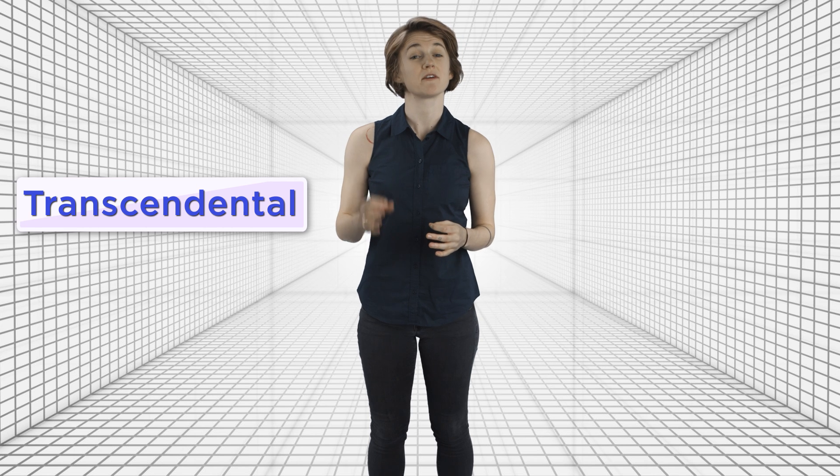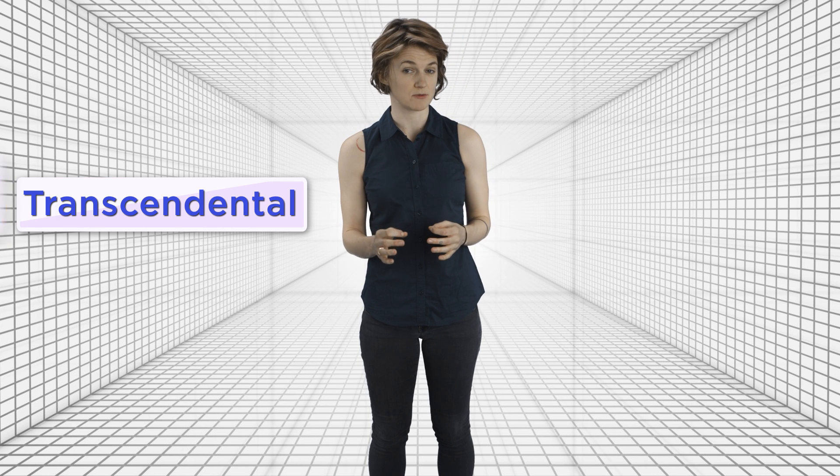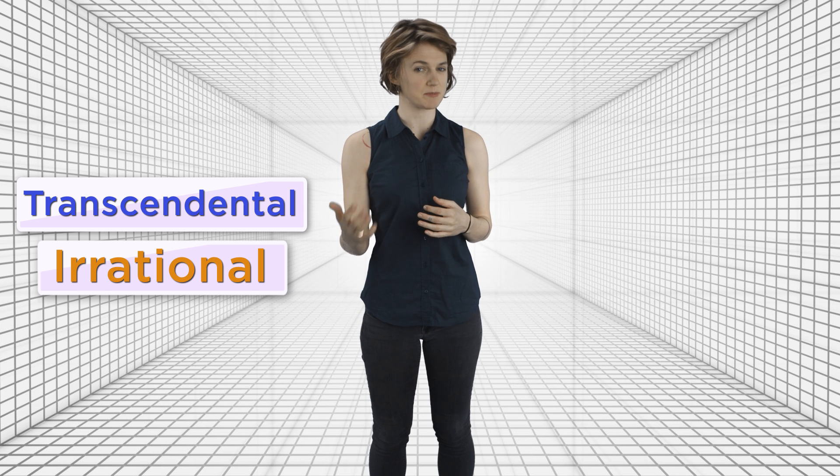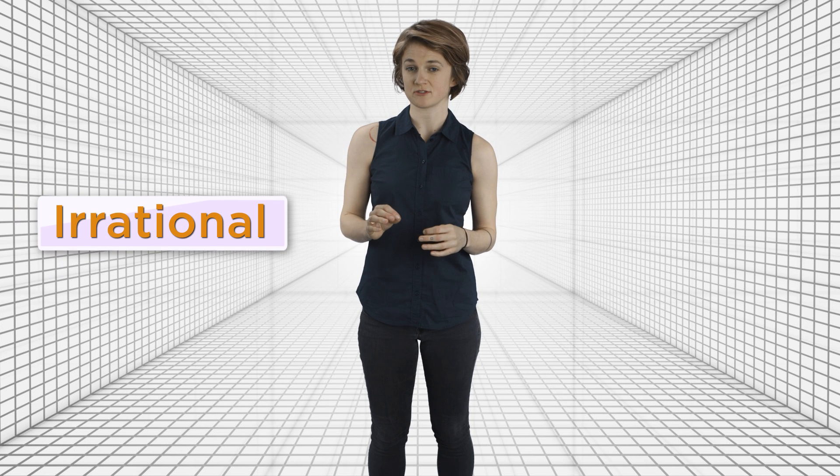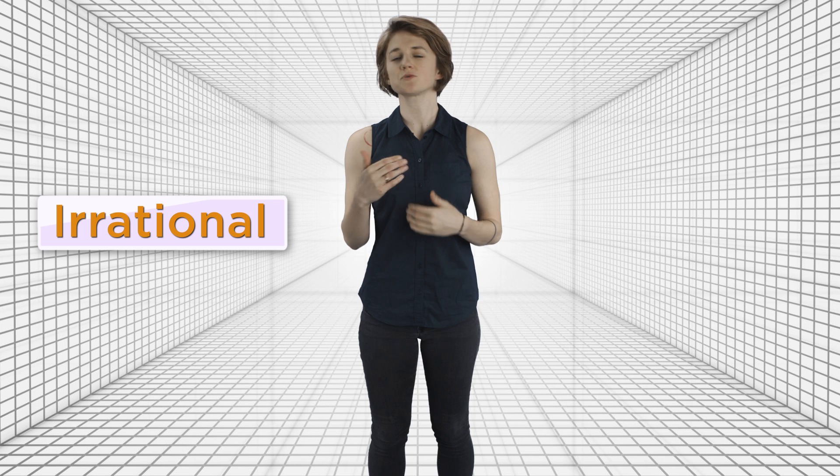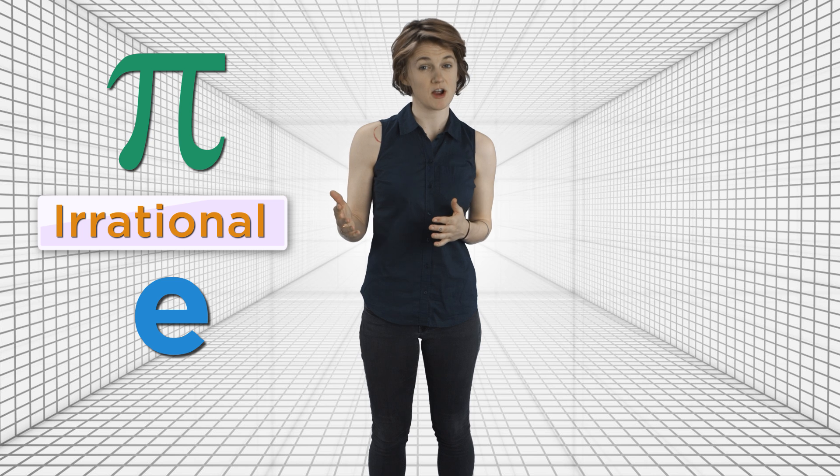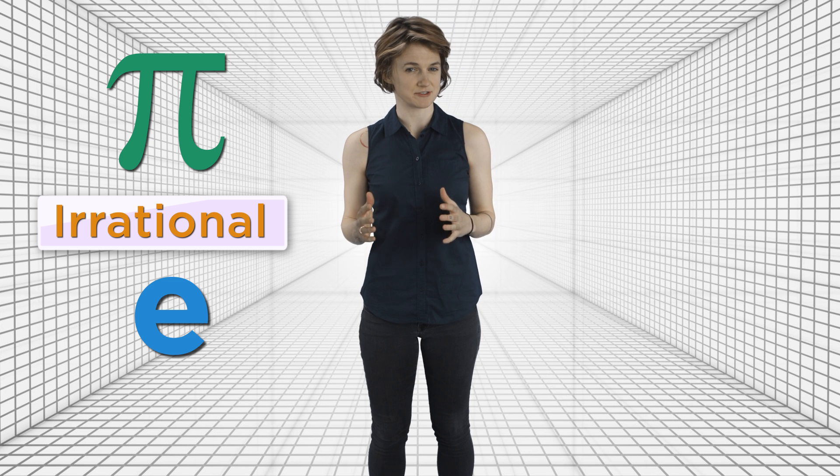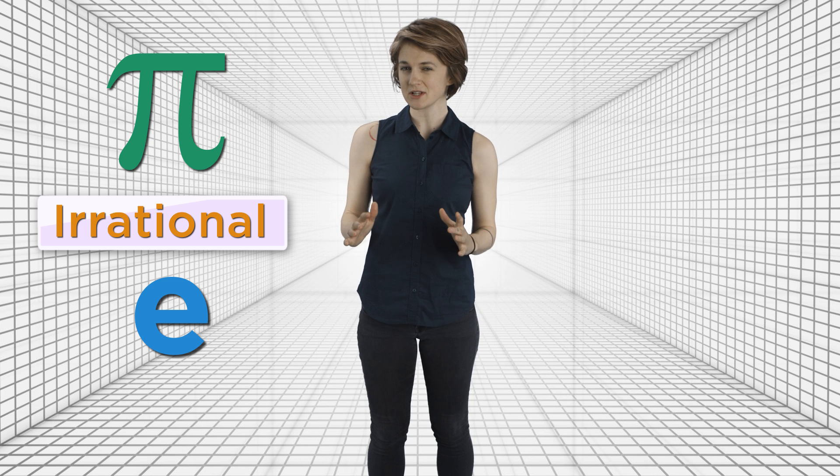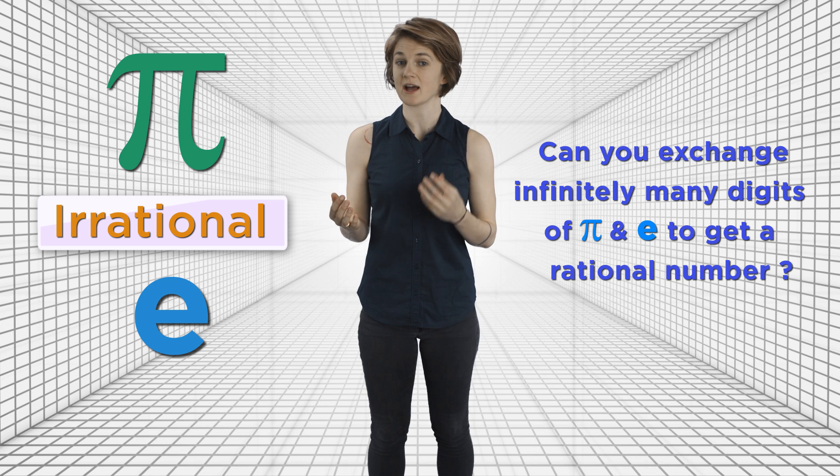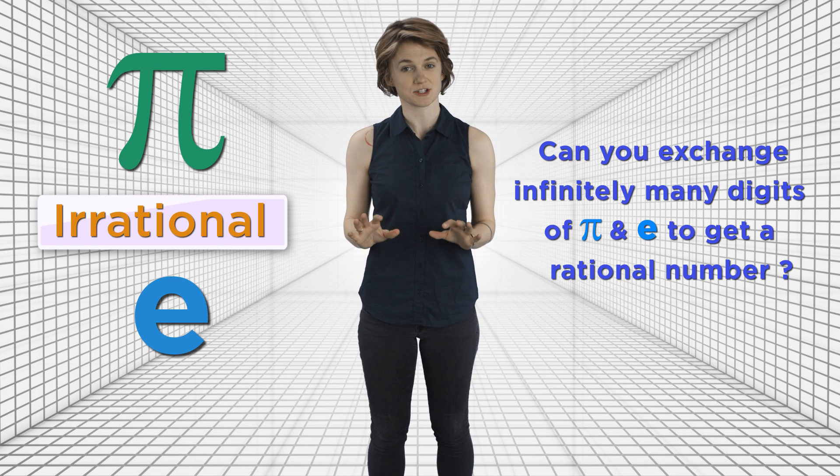Transcendental numbers are a very specific kind of irrational number, and certainly the subject of some future episodes. But we'll focus on irrational numbers in general, which is what most mathematicians in the post did. Pi and e, also known as Euler's number, are two famous irrational numbers. So, we'll ask, can you exchange infinitely many digits of pi and e to get a rational number?